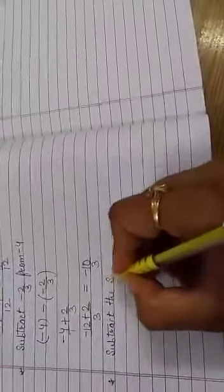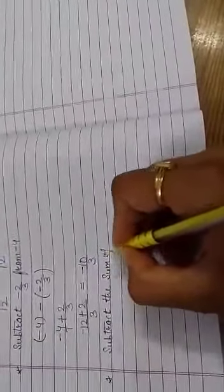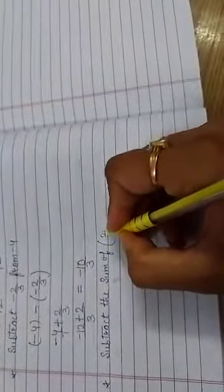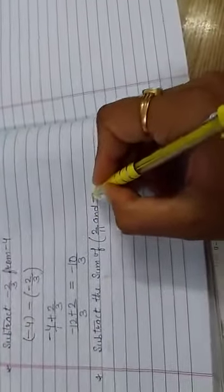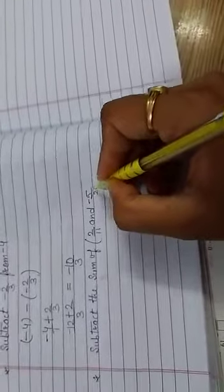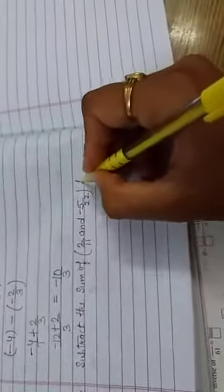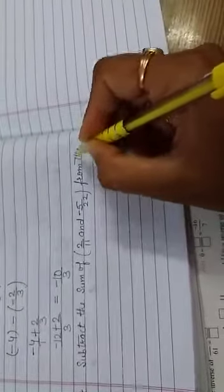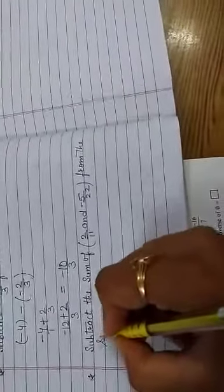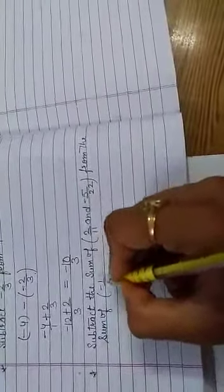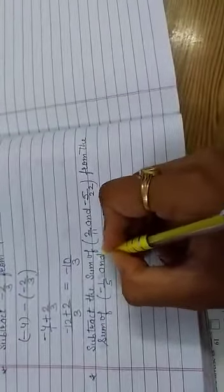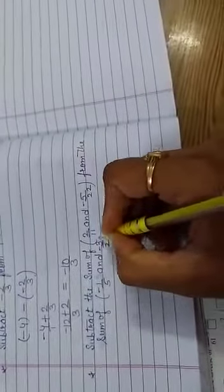See more questions. Subtract the sum of 2 upon 11 and minus 5 upon 22 from the sum of minus 1 upon 5 and minus 3 upon 2.